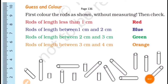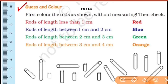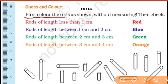Good morning children. In mathematics we are doing lesson 10th and 100th. The next part is at page number 136. Open your book and go to page number 136. Here you will see a very interesting topic: Guess and Color. Visualize, imagine — this is a very important lesson. Let's read that first: color the rods as shown.